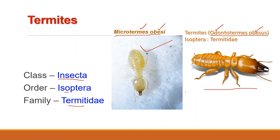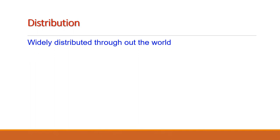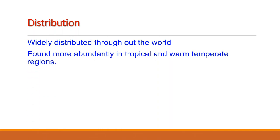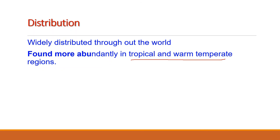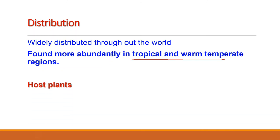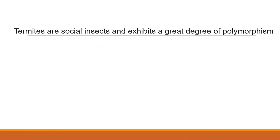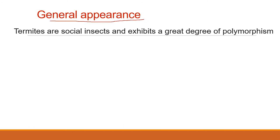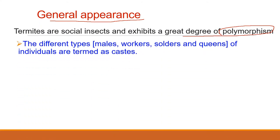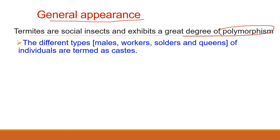Termites are widely distributed throughout the world. More than 2000 species of termites are known, found more abundantly in tropical and warm temperate regions. They feed upon wheat, barley, sugarcane and other plants. Termites are social insects exhibiting a great degree of polymorphism. Different types like male, workers, soldiers and queens are present in their society.